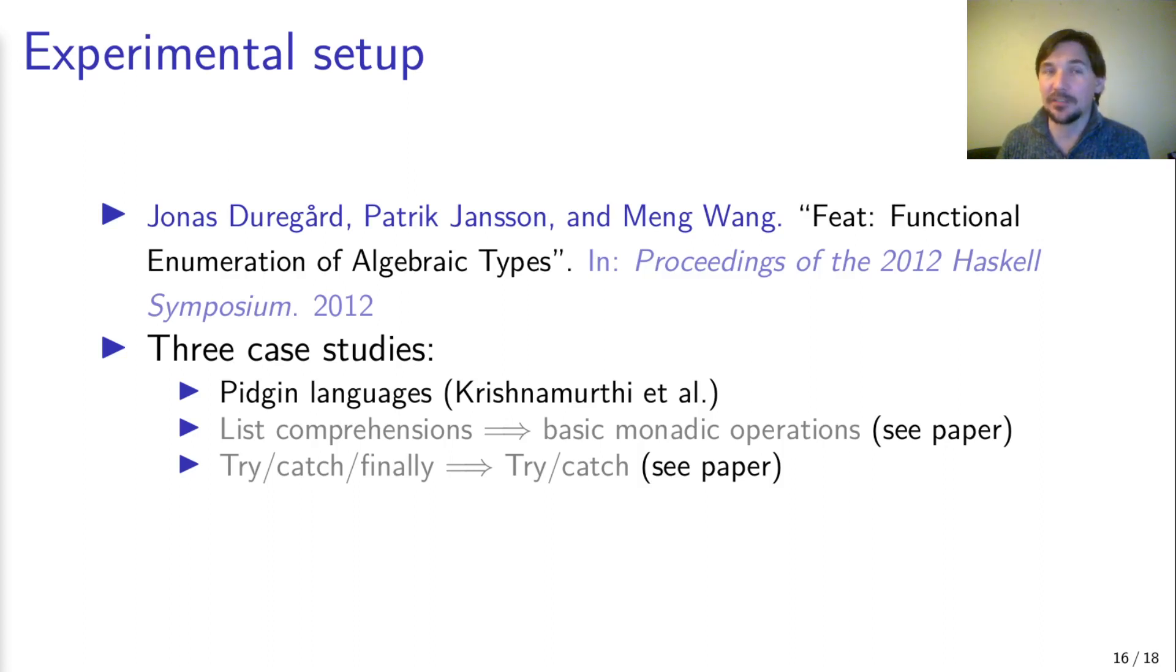We set up three case studies. In the first, we used the aforementioned pigeon languages. In our second case study, we learned the desugarings of simplified list comprehensions into basic monadic operations. And finally, we studied one complex desugaring rule, a try-catch-finally construct translated into a simpler try-catch construct.